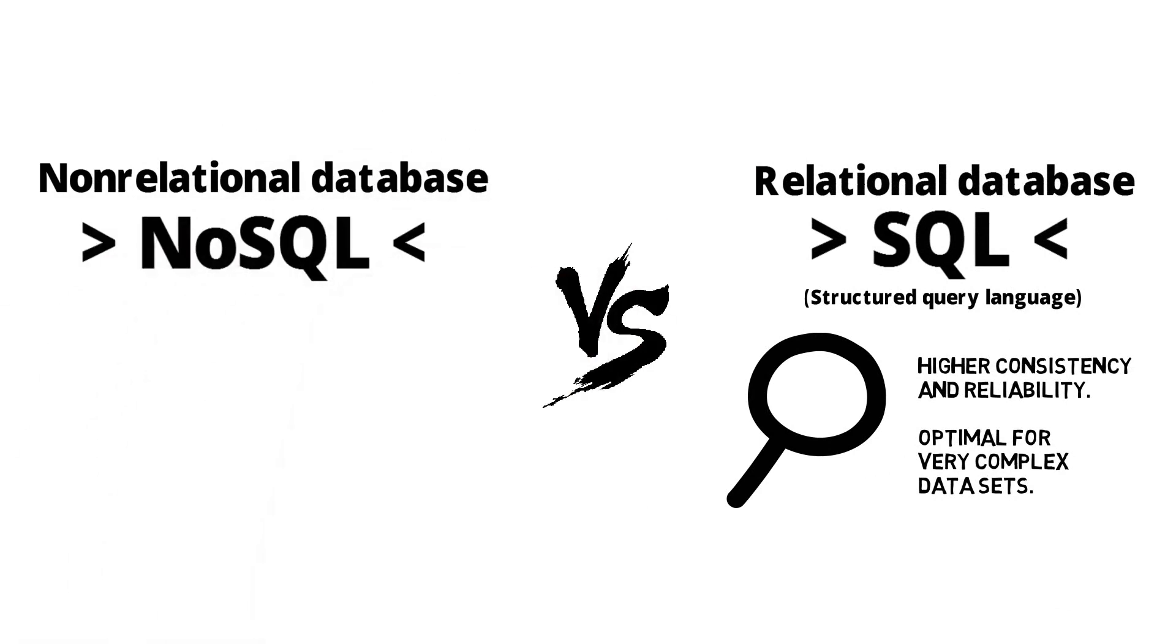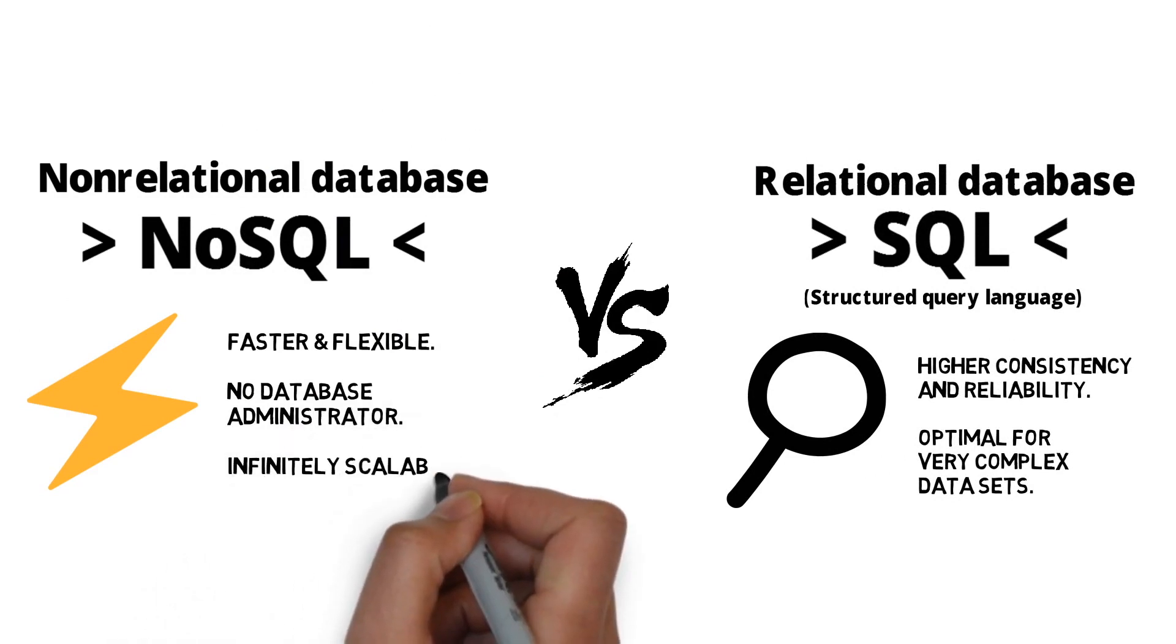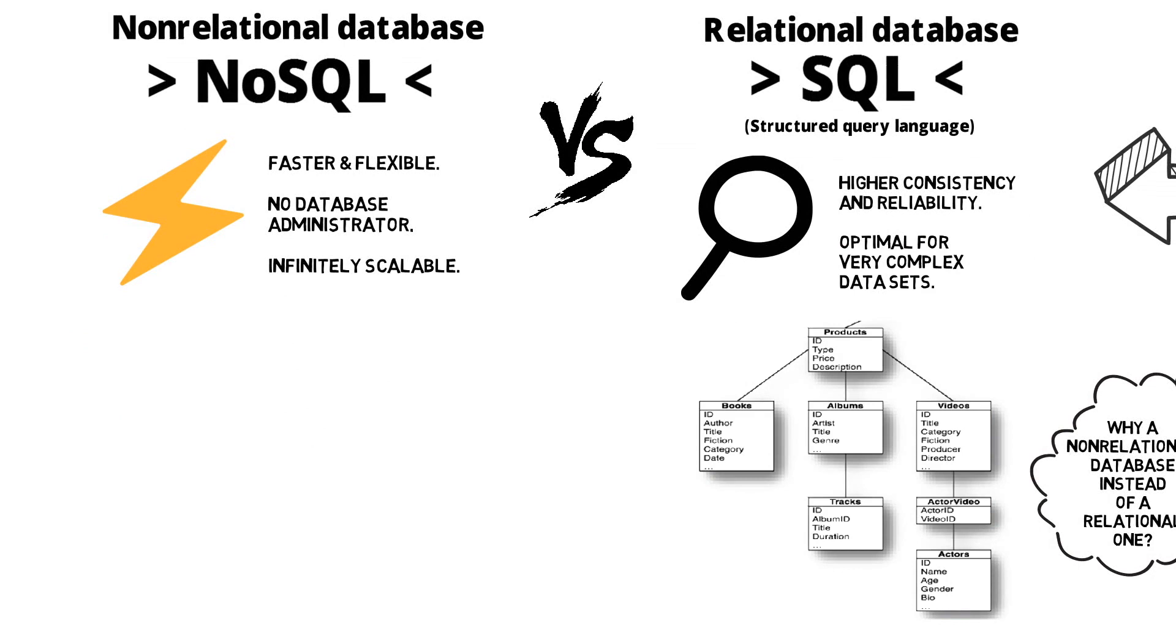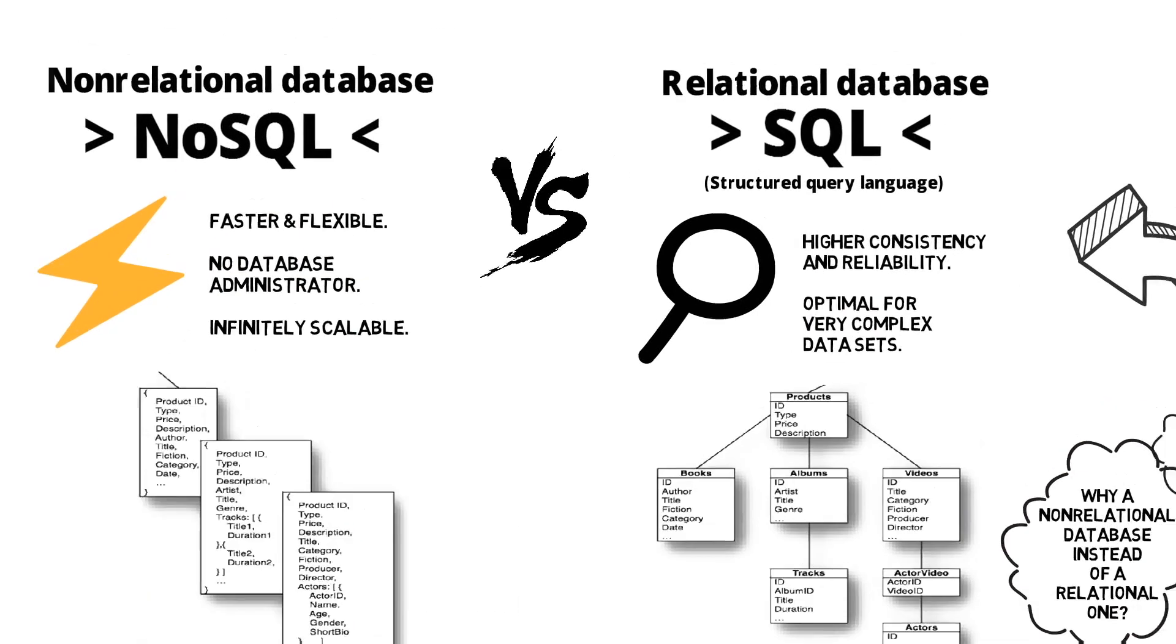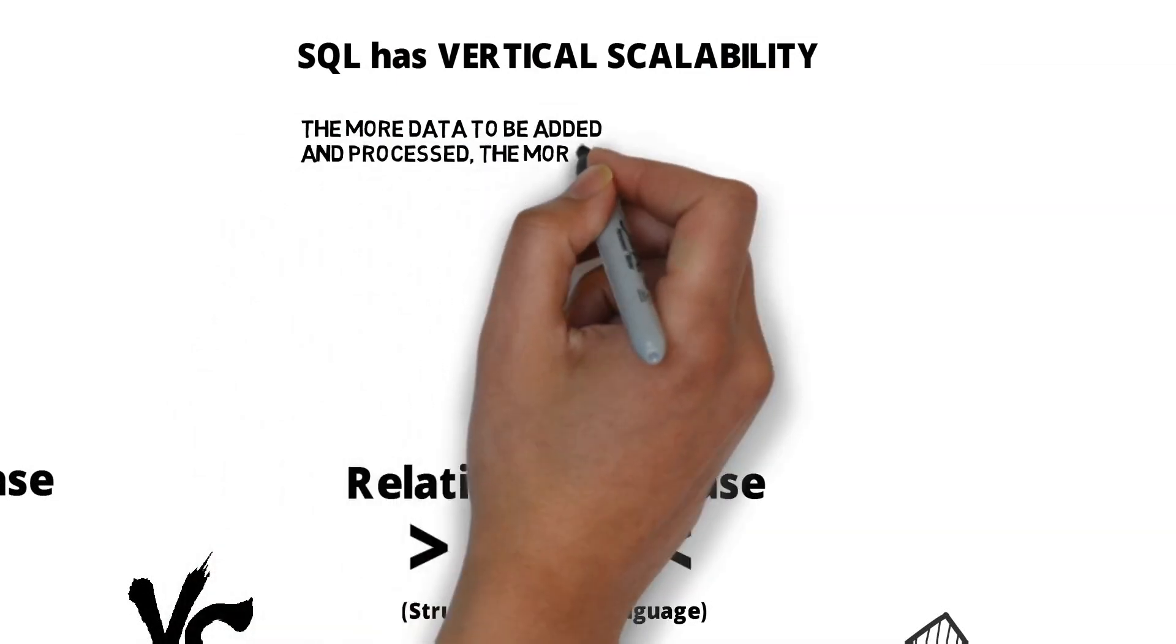A non-relational database has no SQL. It's faster, it's flexible, and there is no data admin required. It's infinitely scalable. So you can see the difference: SQL has vertical scalability.